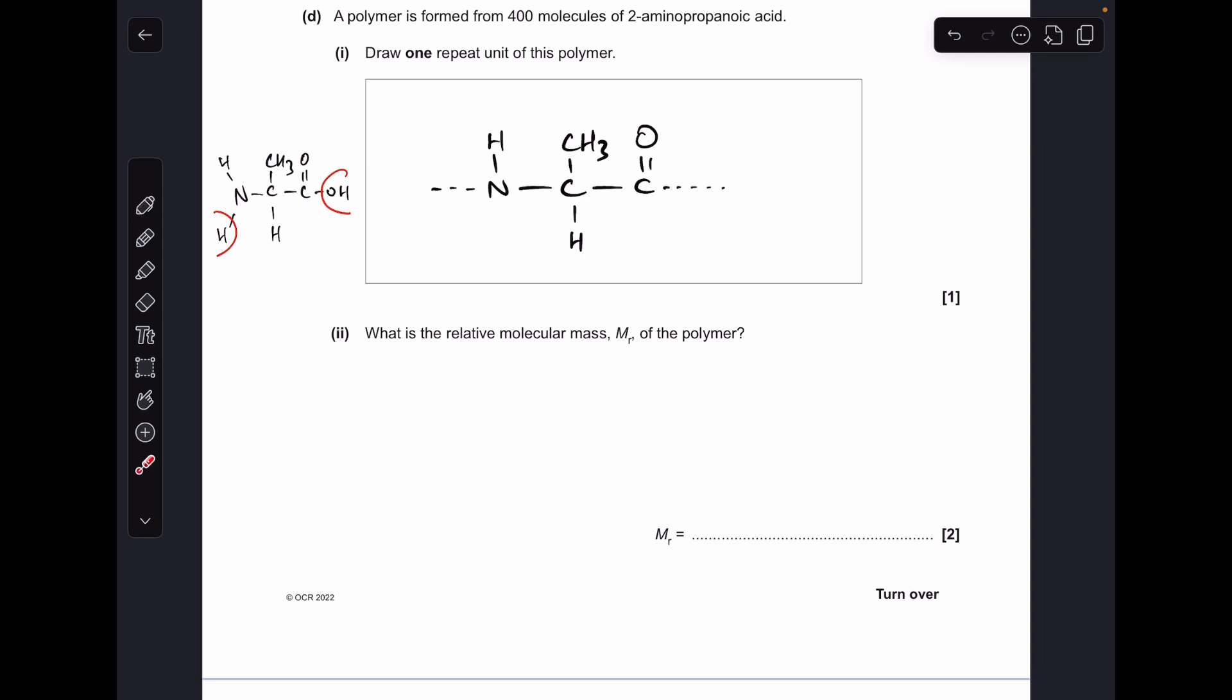And then to work out the MR of the polymer that's made from 400 of these things, we can work out the MR of this repeat unit and multiply that by 400. But then what we've got to bear in mind is at the very start and the very end of the polymer chain, we're still going to have an H on there and we're still going to have an OH on there. So to this, we need to add 18, which makes the MR of the polymer 28,418, so very well done if you got that one right.